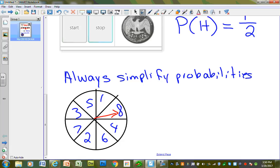And I want to know, what is the probability of spinning an eight? Well, let's look. There are eight different sections. One of them is an eight. So, one out of eight, I write that one eighth.